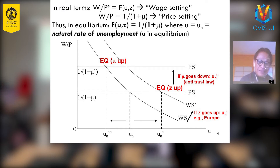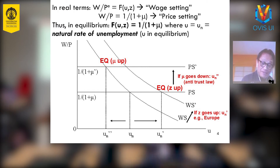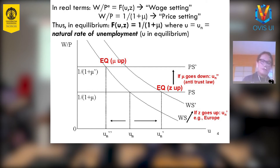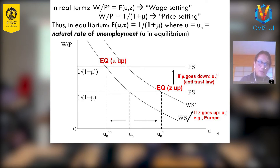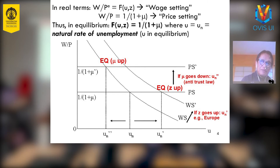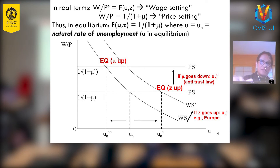Europe is a good example. In Europe, there were very strong unemployment benefits and very strong labor unions, such that the level of unemployment tends to be high compared to other industrial countries including the U.S. The U.S. still has labor unions but not as strong as in Europe, and unemployment benefits in the U.S. are not that strong. That is why the unemployment rate in the U.S. is relatively lower than in Europe.